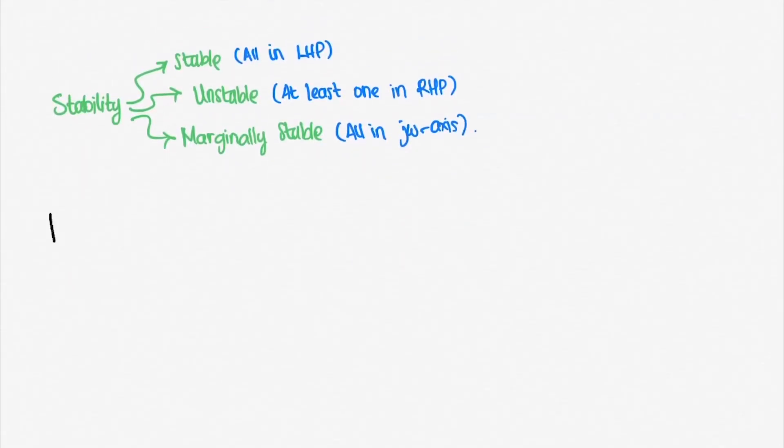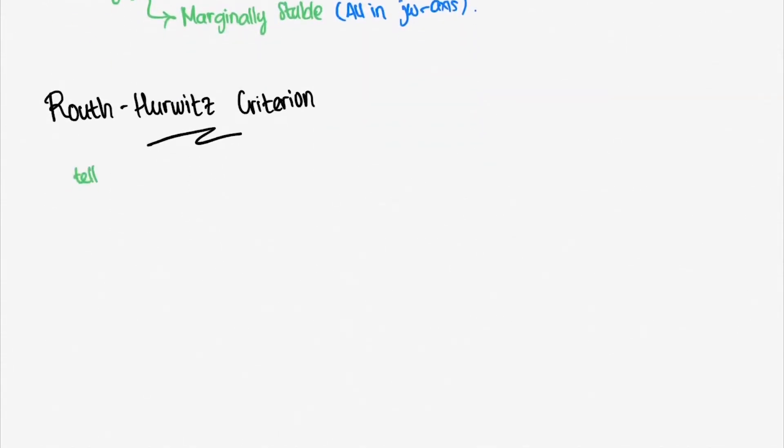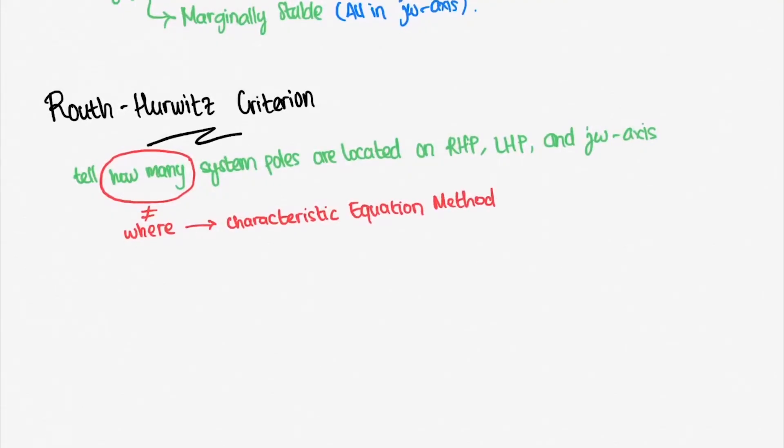That's it for the first method. Next method is called the Routh-Hurwitz criterion. The Routh-Hurwitz method can tell how many system's poles are located in the right half plane, left half plane, and the imaginary axis. Notice that I said how many, not where. Routh-Hurwitz criterion will only tell about the number of poles in each section of the s-plane, but not the exact location. While the characteristic equation method will tell you the exact location, knowing the number of poles in the right half plane is enough to tell us about the system's stability.